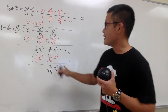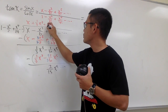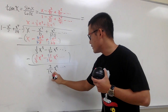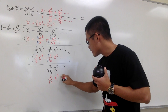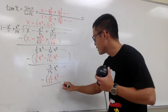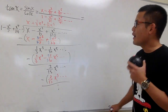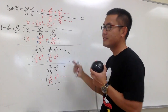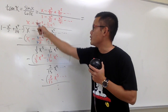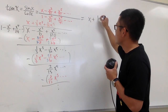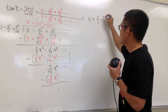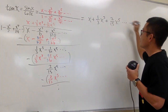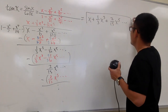For the last term, we put down plus 2 over 15 x to the fifth power times 1, which gives us exactly that. Then we subtract, and so on. As we can see, we found the first three non-zero terms of the power series expansion centered at zero for tangent x: x plus 1 third x to the third power plus 2 over 15 x to the fifth power, and so on.